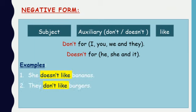Examples of the negative form: she doesn't like bananas, they don't like burgers. When you have I, you, we, or they — use 'don't'. When you have he, she, or it — use 'doesn't'. Please don't forget to take notes in your copybook.